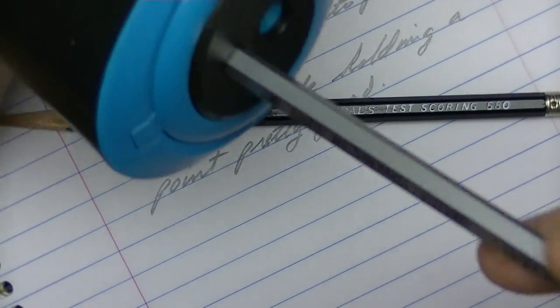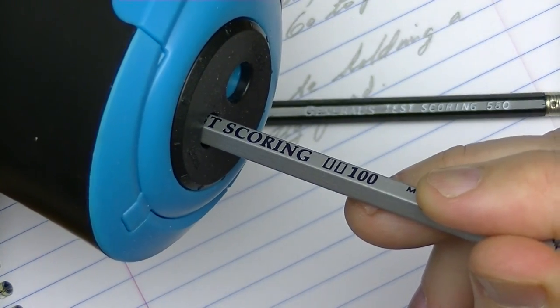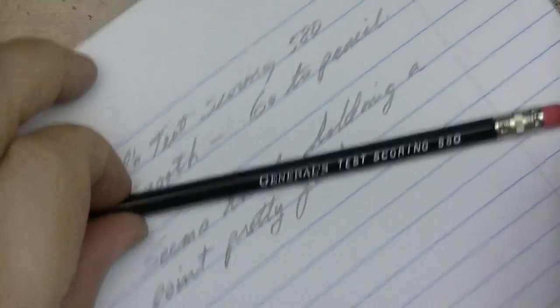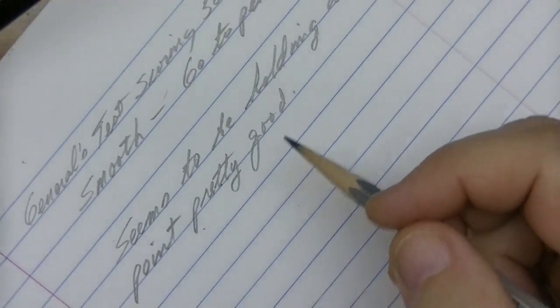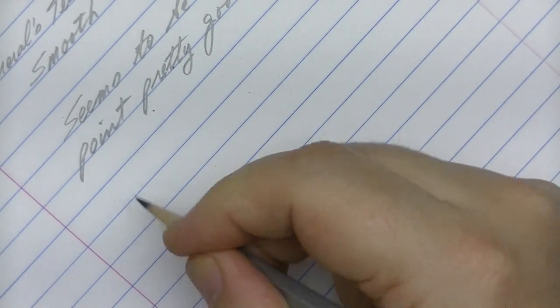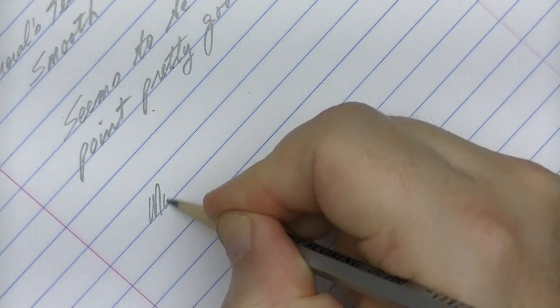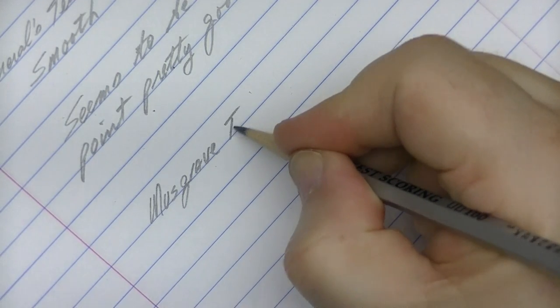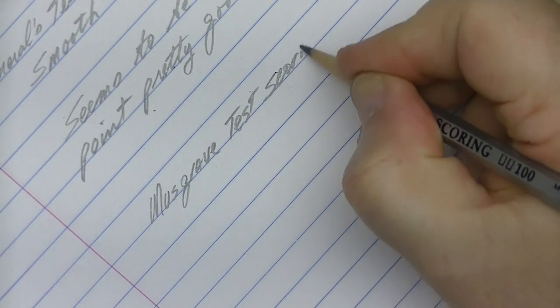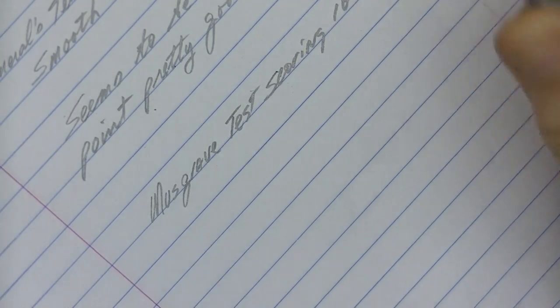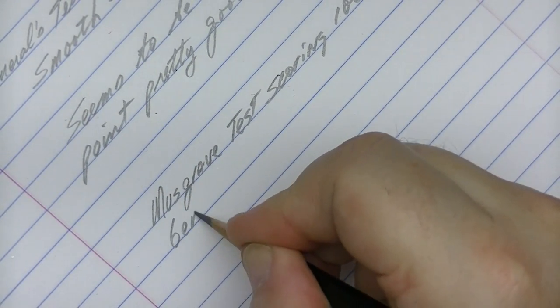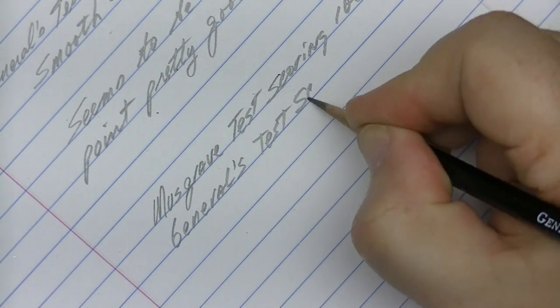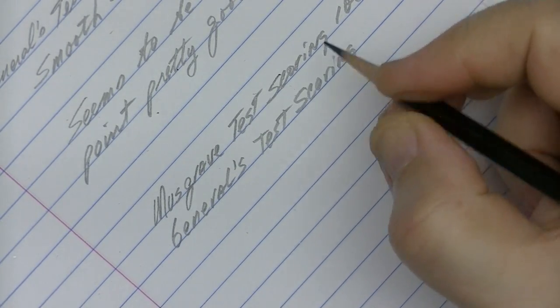So we'll put the Test Scoring 100 up against the Test Scoring 580. Apples and oranges. So here we go. This is the Musgrave Test Scoring 100. And this is the General's Test Scoring 580.